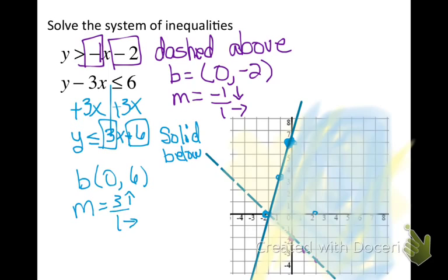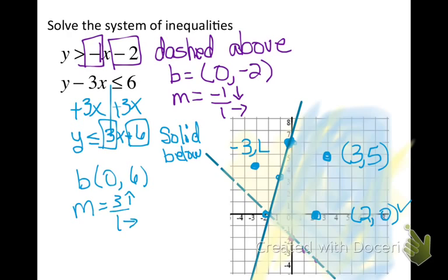For example, the point (2, 0) would be a solution. The point (3, 5) would also be a solution. But the point (-3, 4) out here would not be a solution to this system.